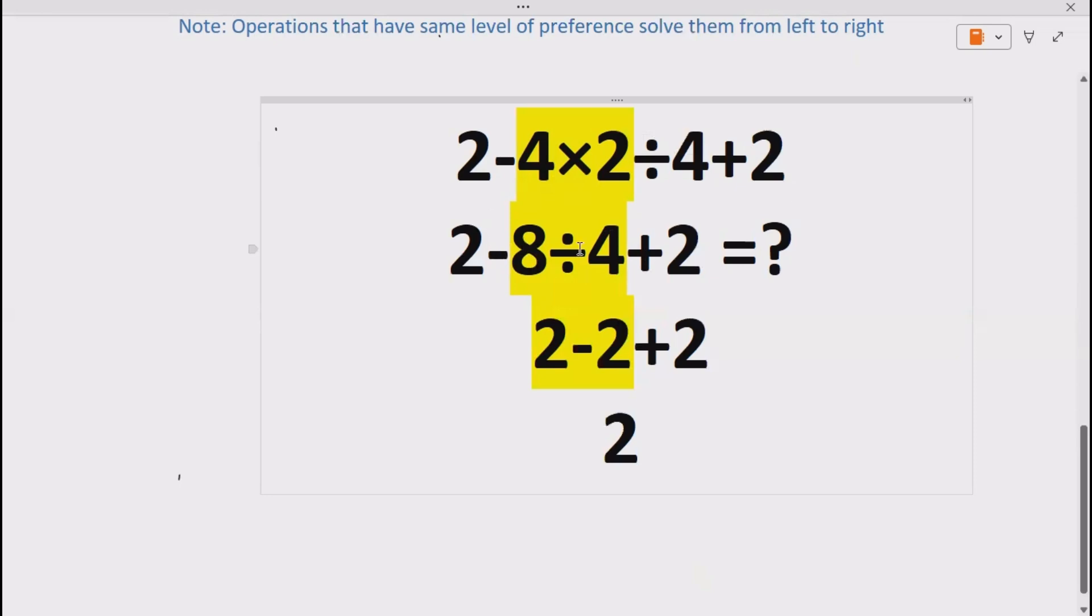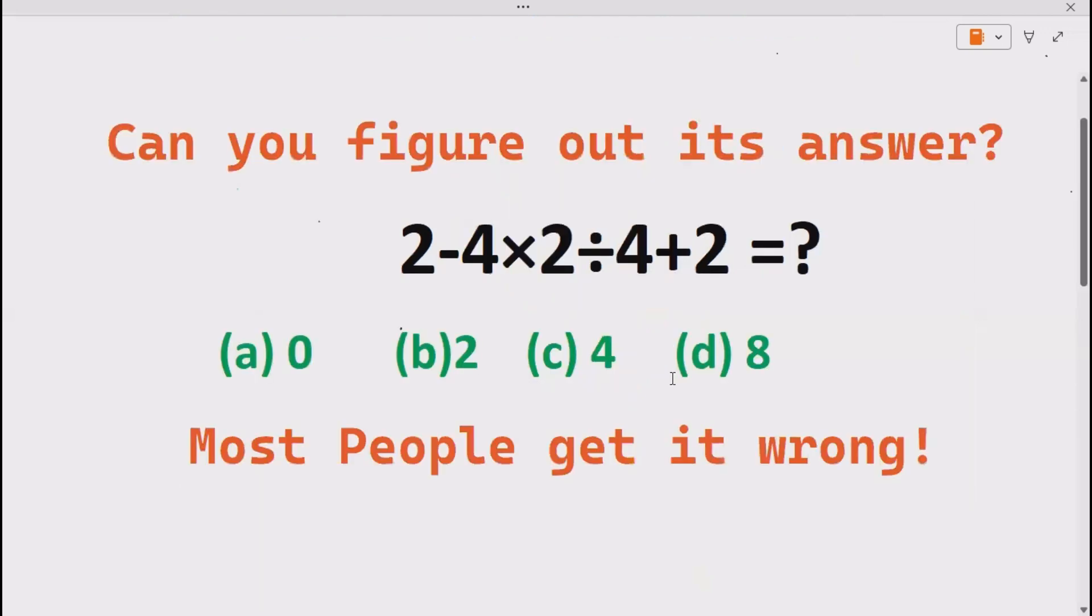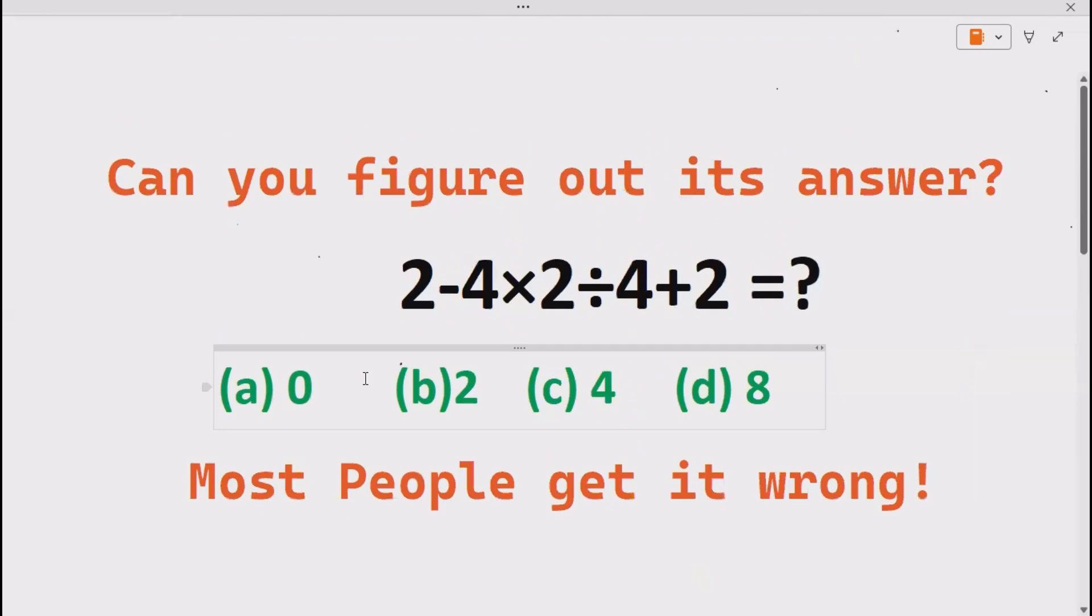Now 2-2 will cancel out, plus 2 remains. It means our correct answer is part (b). I hope you enjoyed this video.